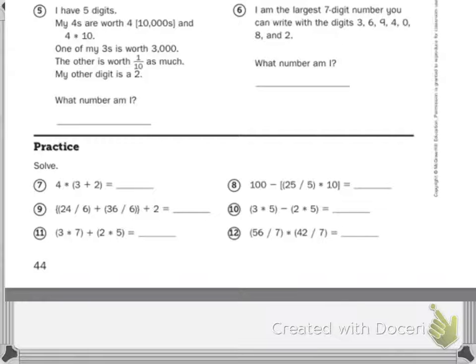My other digit is a two. What number am I? We can do that one together. So first it said, one of my fours is 40,000. So I have to find the 10,000 spot. It's the very first one on the left. And the other is four times ten. So that's 40. I have to find my tens.